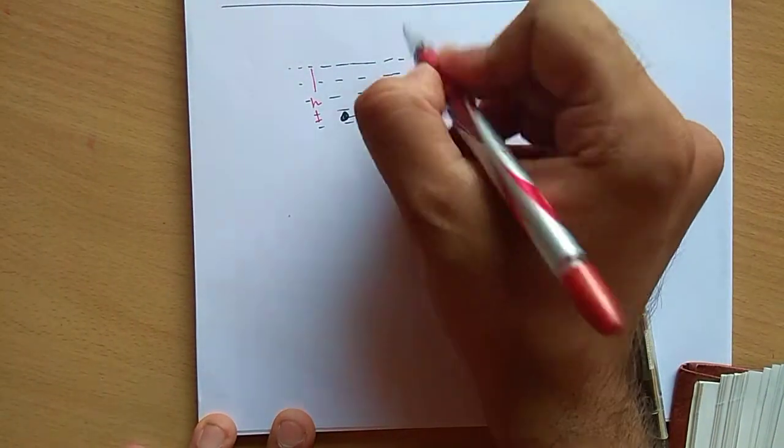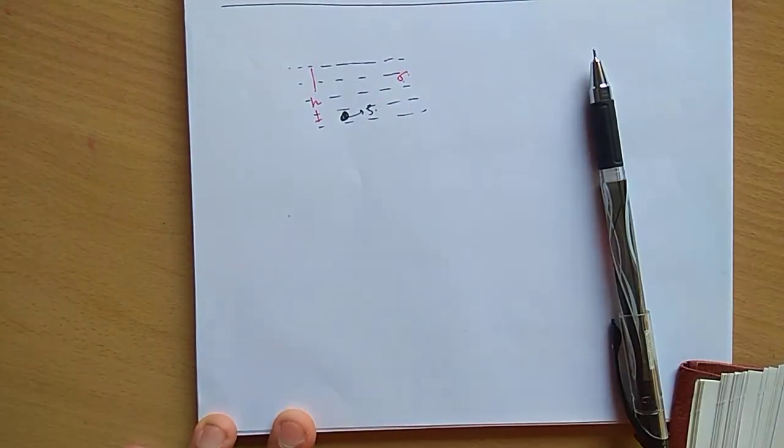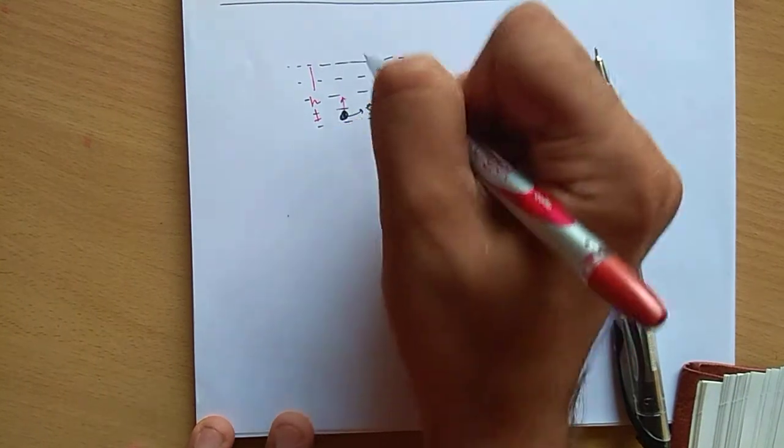And is depth se aap isko chode de to—so this is water. Water ki jo density, it is given to you as sigma. Yeh water ki density hai. Now obviously aap chode doge to yeh upar aayega.